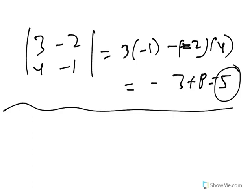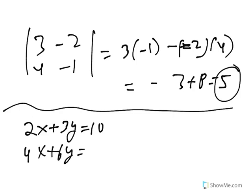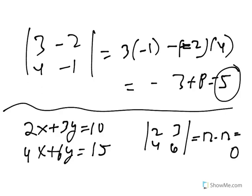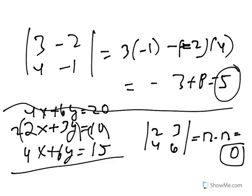I'll show you a situation where a determinant of 0 appears. Imagine I have this equation 2X plus 3Y equals 10, and 4X plus 6Y equals 15. If I take the determinant of the coefficient matrix, I get 12 minus 12 is 0. And notice also that if I actually went and solved this system of equations by multiplying this row on both sides by 2, I get 4X plus 6Y equals 20. And when I subtract it, I would get 0 equals 5. So there'd be no solution.